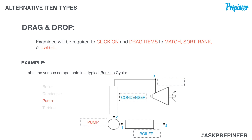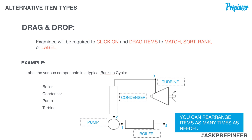Once you're done, before you submit the question to be graded, you can rearrange any of the items if you see them as incorrect. For instance, if we look at the condenser and boiler, we know that we messed up, so we need to drag them and switch them so they are correct, and then submit it.